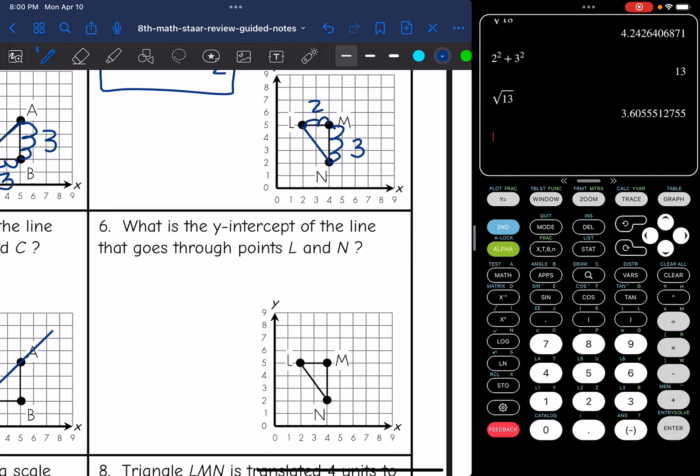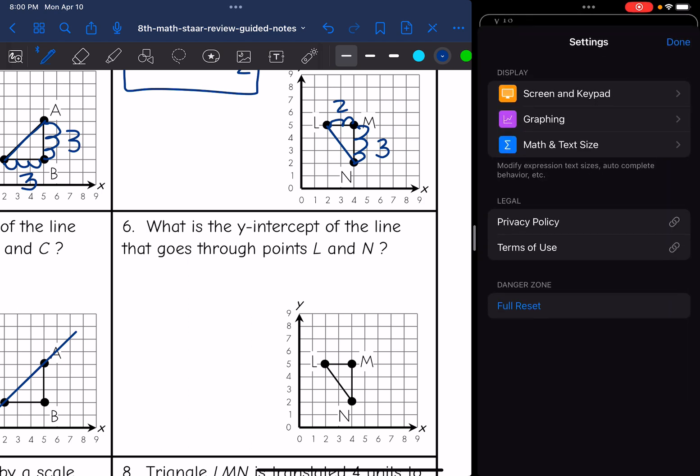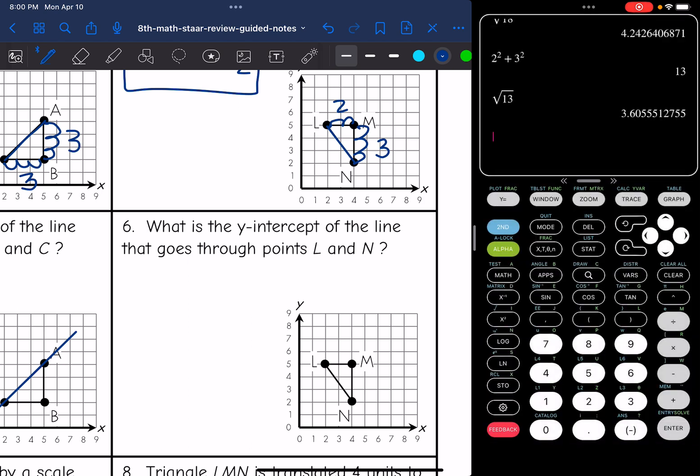Then it's asking for the y-intercept of the line that goes through the points L and N. You can draw your line, or you can keep using that 3 over 2 slope. I'm going to go up from point L. I can go up another 1, 2, 3, and right 2. And that shows me where the y-intercept is going to be. If I drew my line through point L and N, I could see it too. So the y-intercept of this line would be 8.